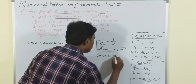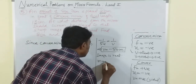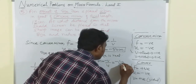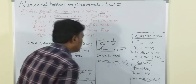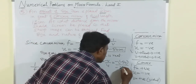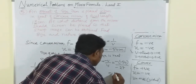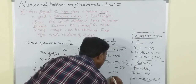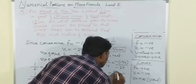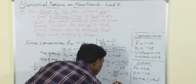Now magnification: m = -v/u = -(-54)/(-27) = -(54/27) = -2. So m = -2.